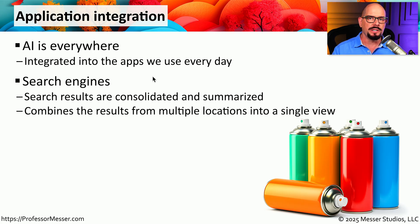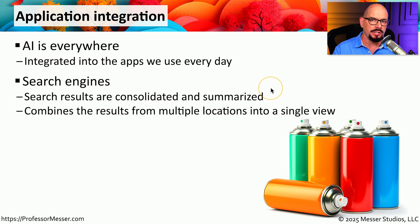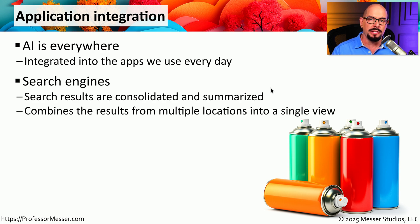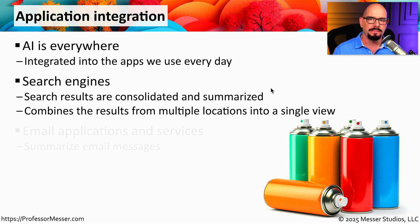For example, if you perform a search on a popular search engine, you may find not only your search results but also a summary of those results created using artificial intelligence. The goal is to take information that normally you would need to find across multiple sites and present all of that information to you as one single AI summary.